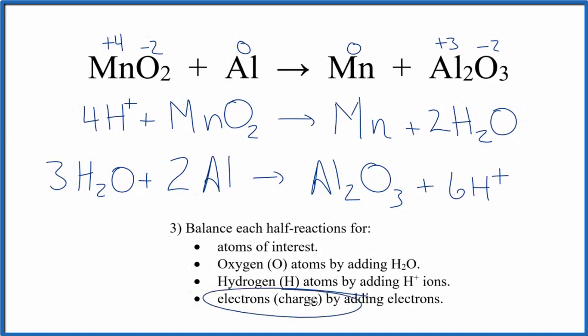Finally, we're going to balance the charge by adding electrons to each side. Four plus, let's add four electrons here. Six plus, let's add six electrons. So those are balanced. We've balanced these half-reactions.